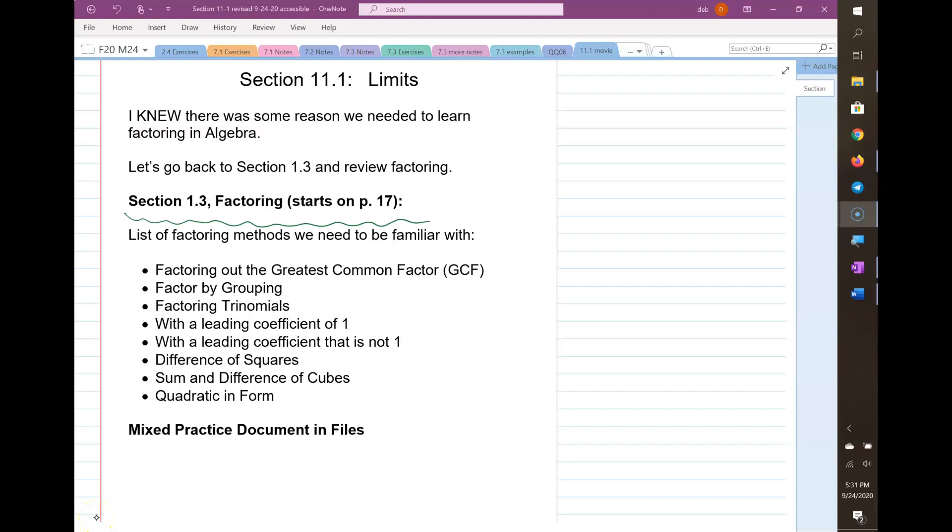We do need to remember all the different factoring techniques that you've learned. If you go back to section 1.3, there's a factoring section that starts on page 17. It's a nice review of all the different factoring techniques. We learn them in a particular order because factoring out the greatest common factor is always the thing you should try to do first.